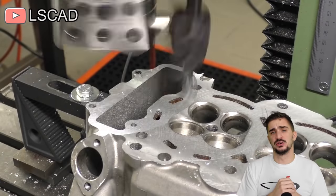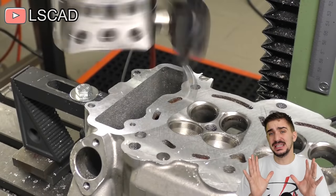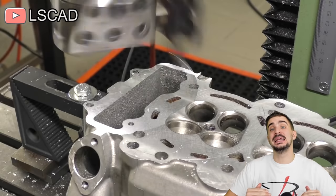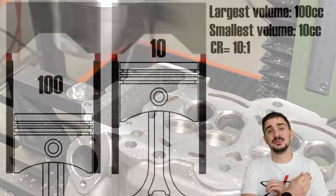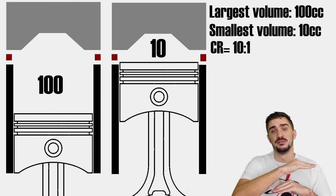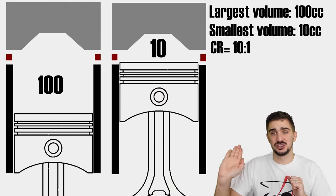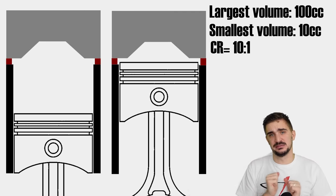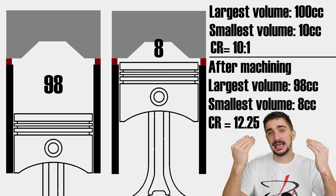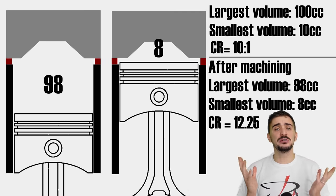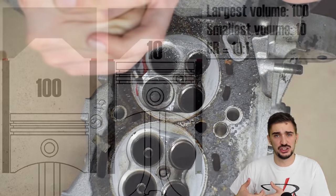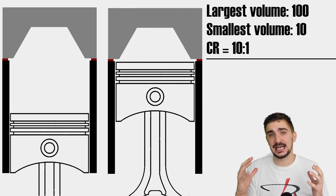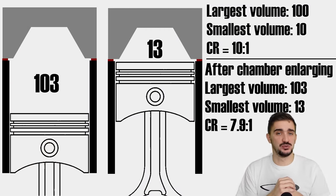You must ensure that everything is machined perfectly flat for a reliable seal with a very thin head gasket. Machining is also a great and inexpensive way to modify your compression ratio. However, machining can only remove material, which means it can only increase — not decrease — your compression ratio. By machining away material from your block deck or cylinder head surface, we decrease cylinder volume and increase compression ratio. The only way to modify combustion chamber volume is to grind away material from within the combustion chamber, which increases the chamber size and reduces the compression ratio.